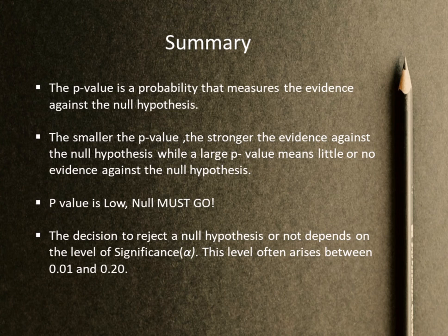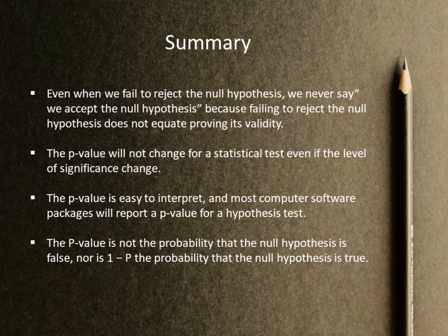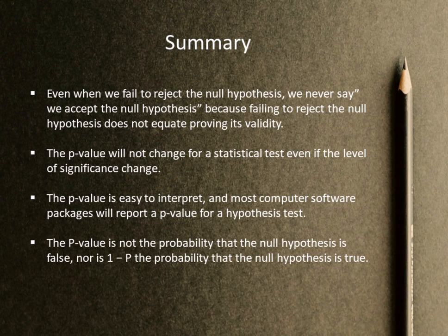The decision to reject a null hypothesis or not depends on the level of significance, which often ranges between 0.01 and 0.20. Even when we fail to reject the null hypothesis, we never say we accept the null hypothesis, because failing to reject it does not equate to proving its validity. The p-value will not change for a statistical test even if the level of significance changes. The p-value is easy to interpret and most computer software packages will report a p-value for a hypothesis test. Note that the p-value is not the probability that the null hypothesis is false, nor is 1-p the probability that the null hypothesis is true.